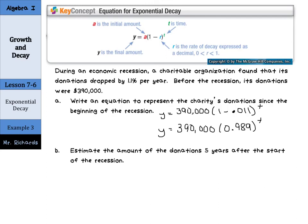And now we get to use this. Estimate the amount of the donations five years after the start of the recession. So we'll use the equation Y equals $390,000 times 0.989, and that's going to be to the fifth power.